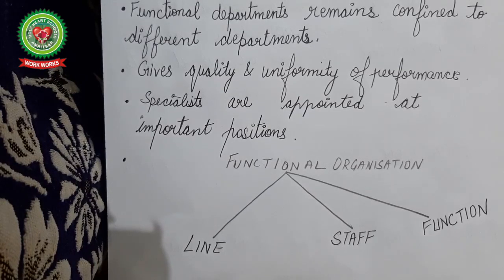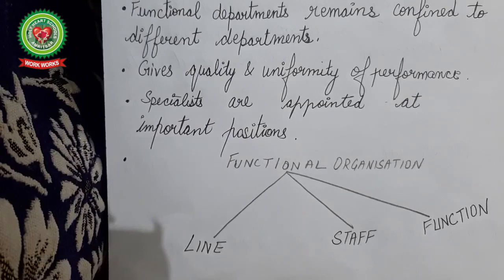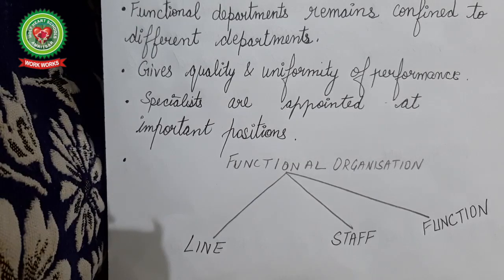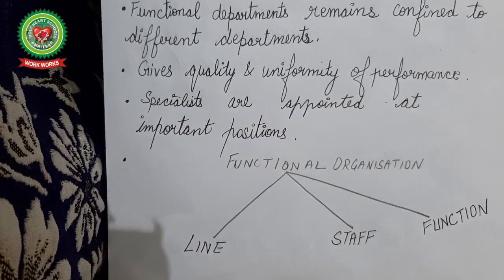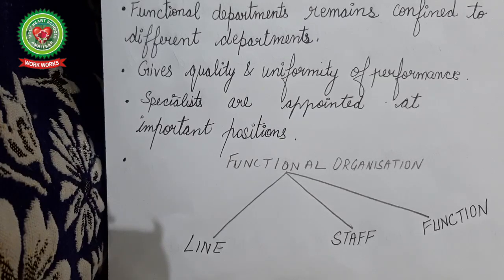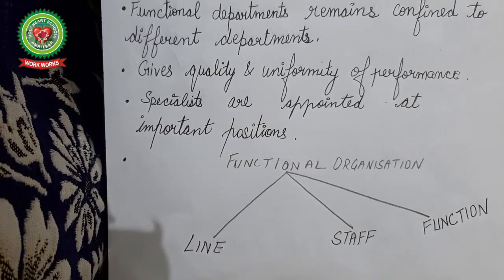This topic of functional organization is not yet over — we still have to cover line, staff, and function in detail. In tomorrow's lecture, we will start with an important part of functional organization: functional foremanship, its specialist types, merits, demerits, and suitability. Thank you all for today.